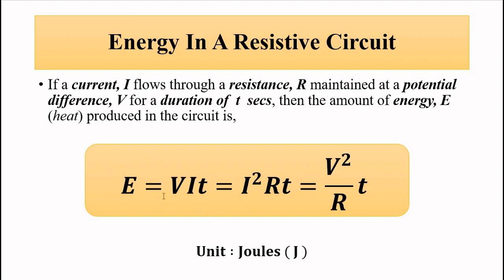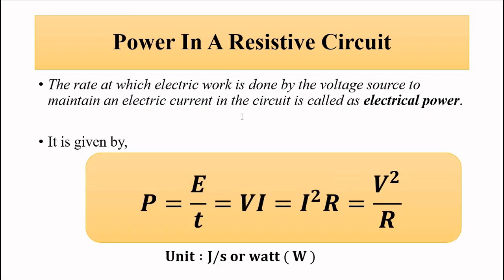The unit of electrical energy is Joule. Power in this resistive circuit is the rate at which electrical work is done by the voltage source to maintain that current — it is simply electrical energy divided by time, giving VI, I²R, or V²/R. Basically we can understand power, be it DC or AC, as the product of voltage and current.